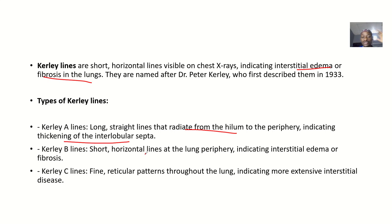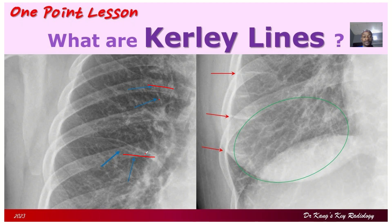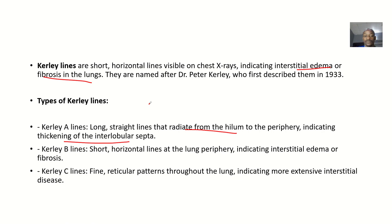Then we have the Kerley B lines. These are short horizontal lines at the lung periphery — meaning almost at the outer edge of the lungs — and they indicate interstitial edema or fibrosis.